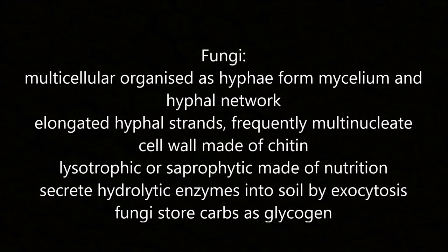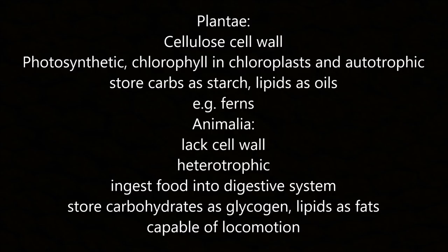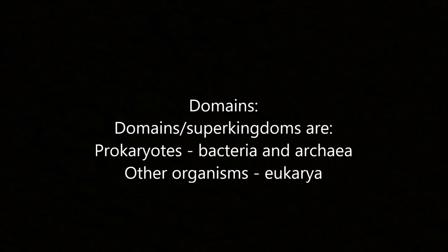Fungi are multicellular organisms organised as hyphae forming a mycelium network. Elongated hyphal strands are frequently multinucleate with cell walls made of chitin. They are lithotrophic or saprophytic, secreting hydrolytic enzymes into the soil via exocytosis, and store carbohydrates as glycogen. Plantae have a cellulose cell wall and are photosynthetic, with chlorophyll in chloroplasts; they store carbohydrates as starch and lipids as oils. Animalia lack a cell wall, are heterotrophic, ingest food into the digestive system, store carbohydrates as glycogen and lipids as fats, and are capable of locomotion.